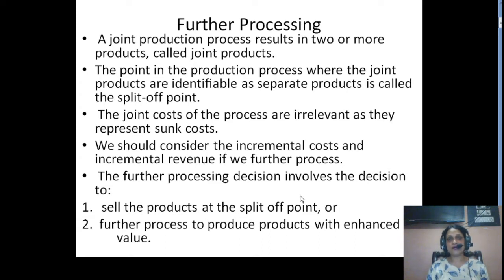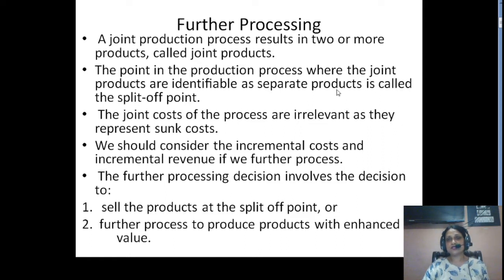Till the individual product generation, all this crude oil passes through a joint production process. These products are called joint products. The point in the production process where the joint products are identifiable as separate products is called the split-off point. After the split-off point, products will be treated as individual products; prior to that, they are treated as joint products.